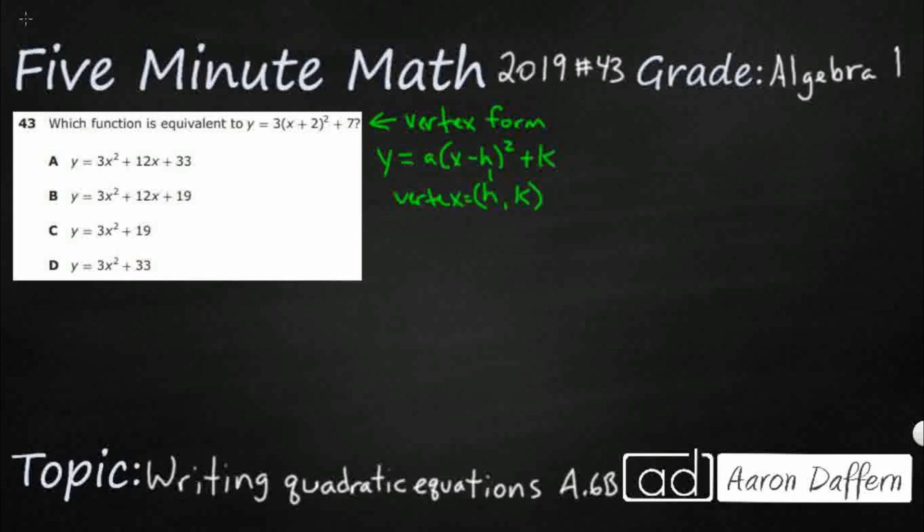So we pull those out of the vertex form and then that a lets us know if it's a negative a that we're actually going to be opening down as a parabola. And if it is a positive a, we're actually going to be opening up as a parabola. So it's very helpful.